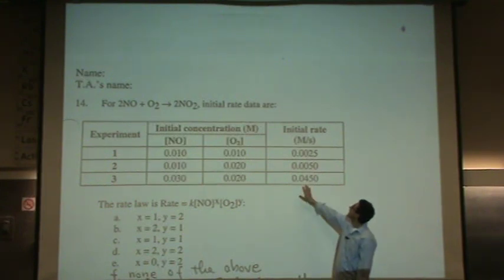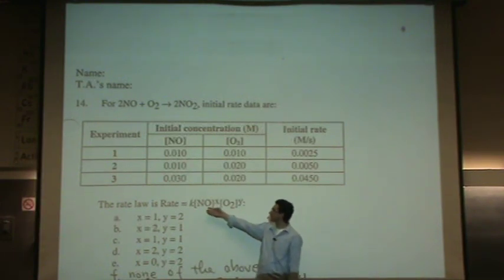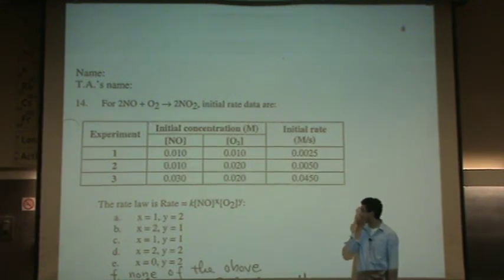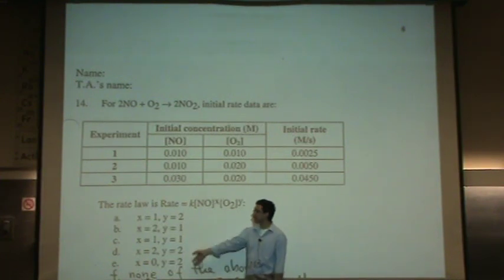You've got the overall rate, molarity per second. They even give you the rate law nicely, raised to the x and y power. So we're finding x and y in the order. We don't have to find k in this case, but I'll show you how to do it if you'd be interested. And we'll pick one of the answers.